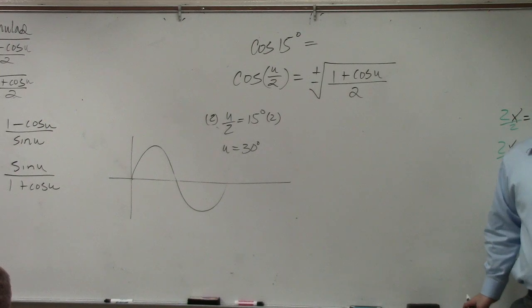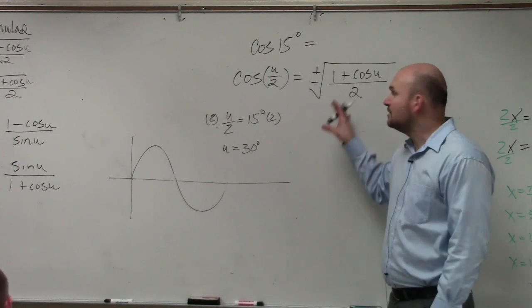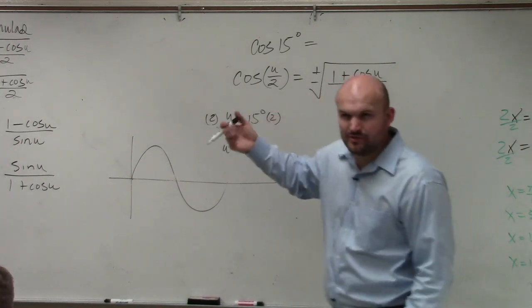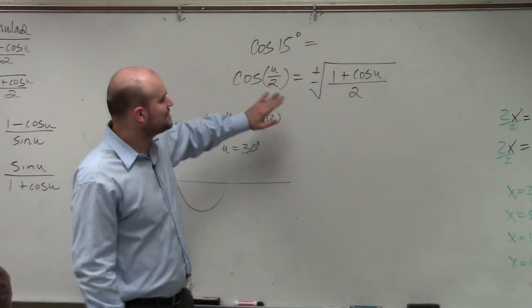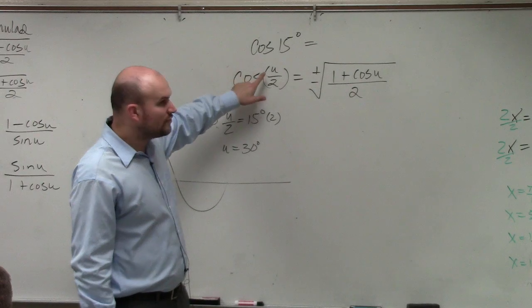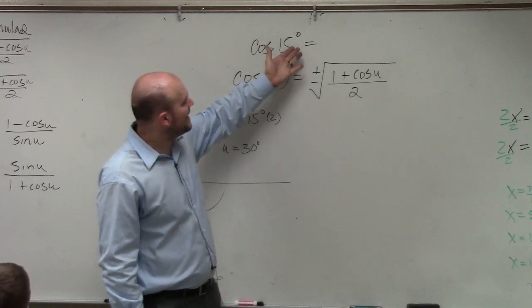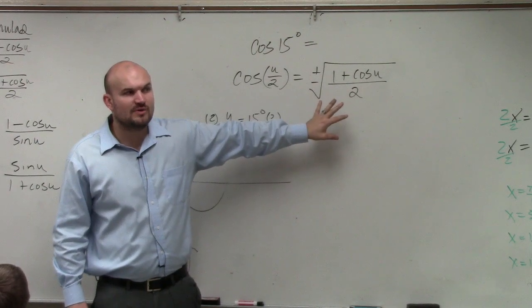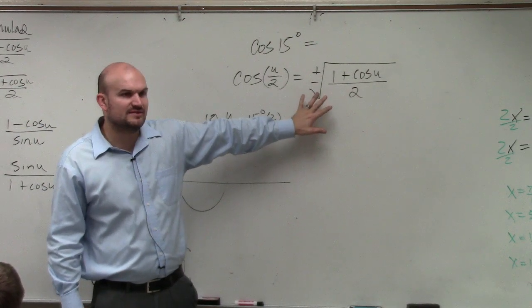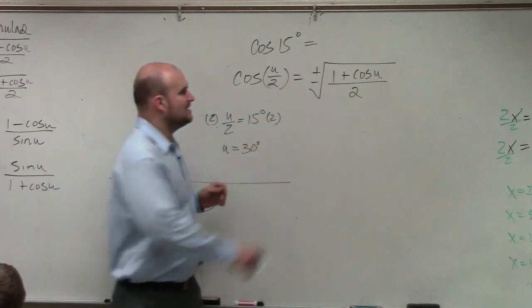So the next thing is, if you guys notice here, this is a plus or minus. When do you know if it's plus or when you know when it's minus? Well, what you want to do is look at your angle. The cosine of u over 2, when you're using your half angle, which quadrant is this in? First quadrant. So is cosine going to be positive or negative in the first quadrant? Positive.